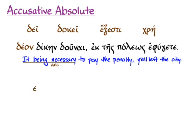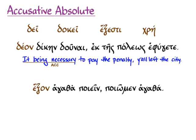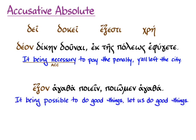We can see it again in ἐξόν ἀγαθά ποιεῖν, ποιῶμεν ἀγαθά — 'it being possible to do good things, let us do good things,' or 'since it is possible to do good things, let us do good things.' Again, that neuter accusative singular participle is doing all of this work to help us see that we have a circumstance being expressed by the ideas in this impersonal verb.